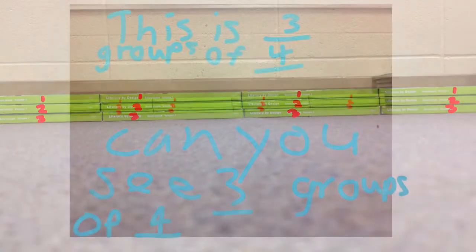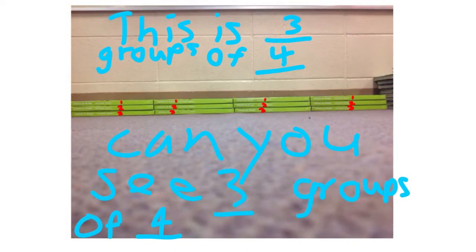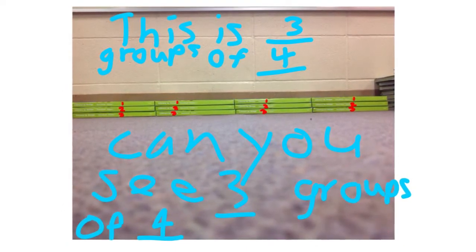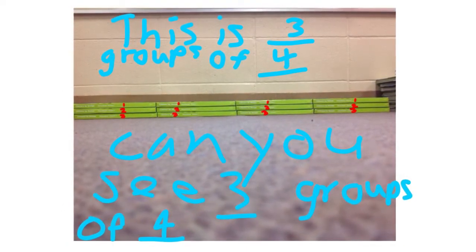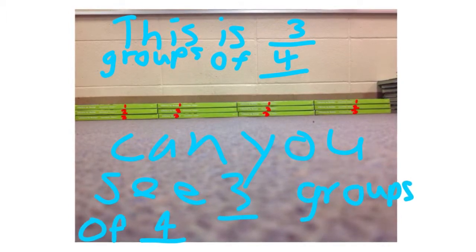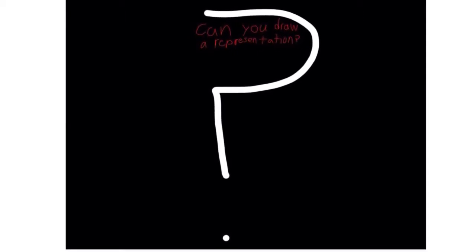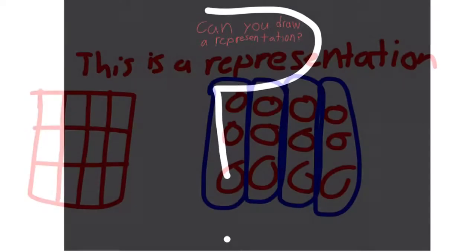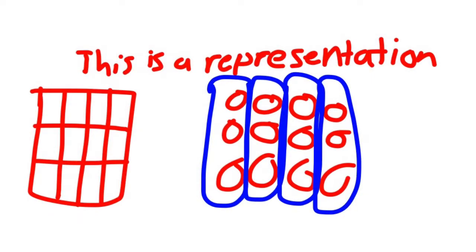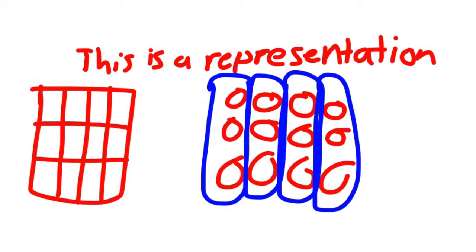This is three groups of four. Can you see three groups of four? Can you draw a representation? This is a representation of three groups of four.